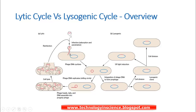Once the viral DNA enters the bacterial cell, it forms a circular shape and starts to replicate by a rolling cycle. The phage DNA replicates and uses the host machinery to synthesize the viral capsids — the outer coat of the virus. Once the proteins are synthesized using the host machinery, they package themselves into the newly formed viruses, which are released by breaking the cell, releasing viral particles ready to reinfect new bacteria.